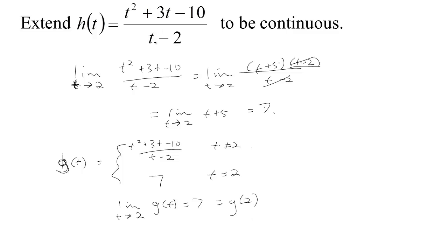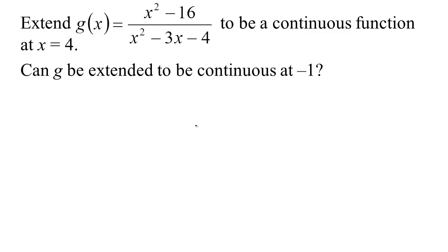What we've done is taken a function that was continuous everywhere but a particular point — it just wasn't defined at that point — so we made a new function that's defined in more places, defined now at two as well as everywhere else. That is, we extended this to be a continuous function. Let's look at another example.